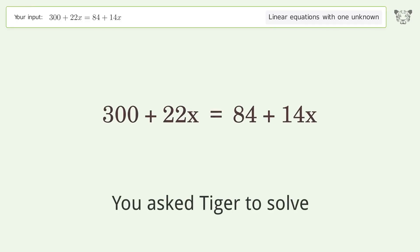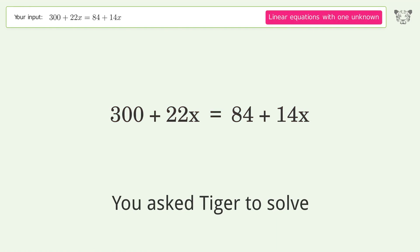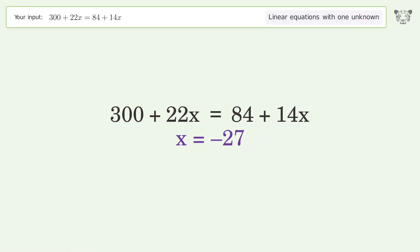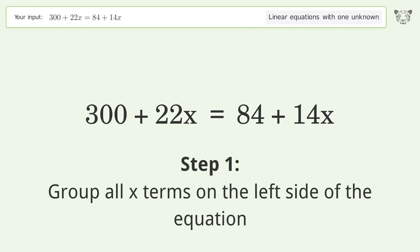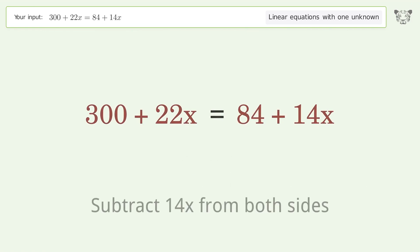You asked Tiger to solve this. This deals with linear equations with one unknown. The final result is x equals negative 27. Let's solve it step by step. Group all x terms on the left side of the equation. Subtract 14x from both sides.